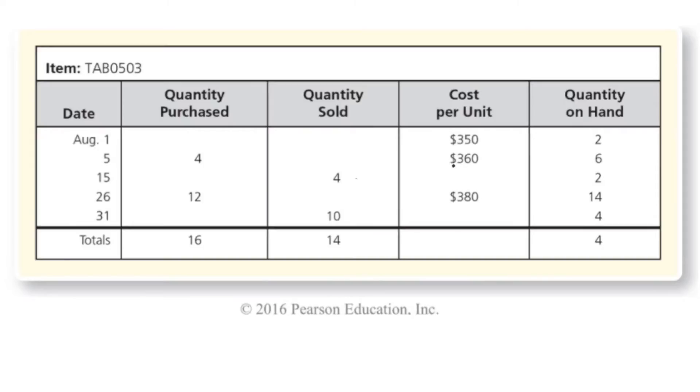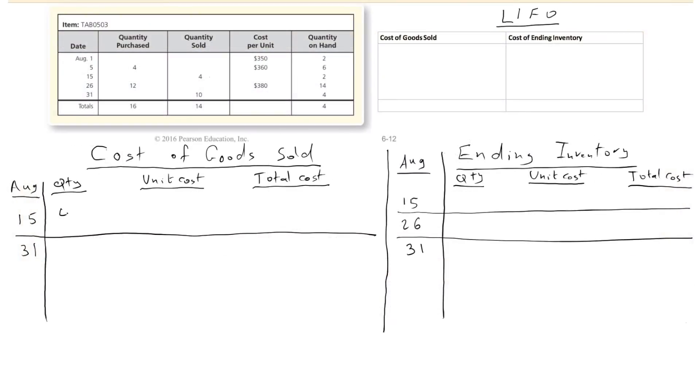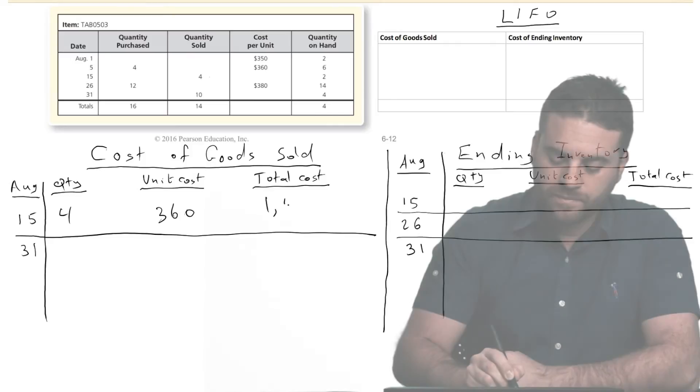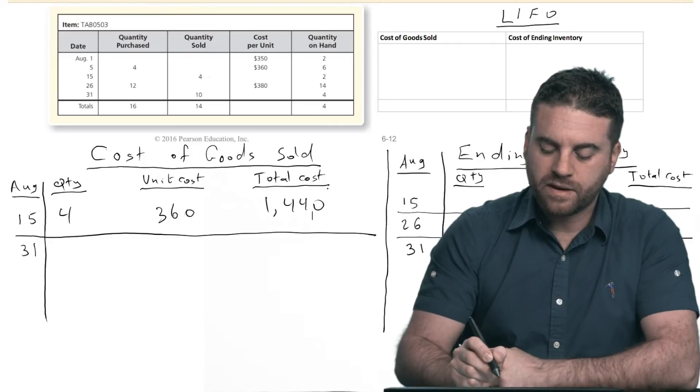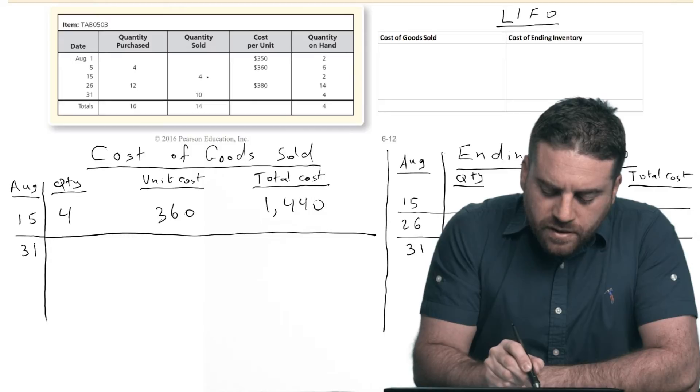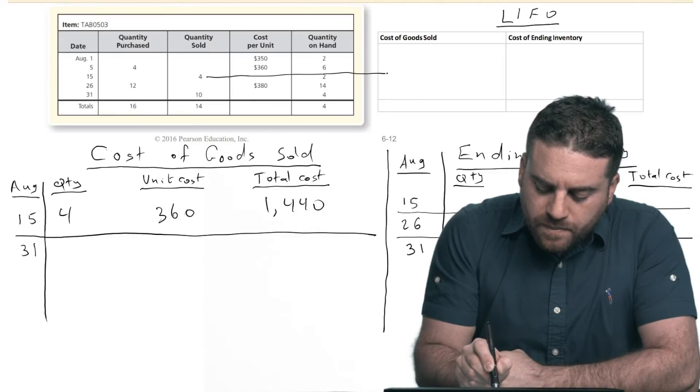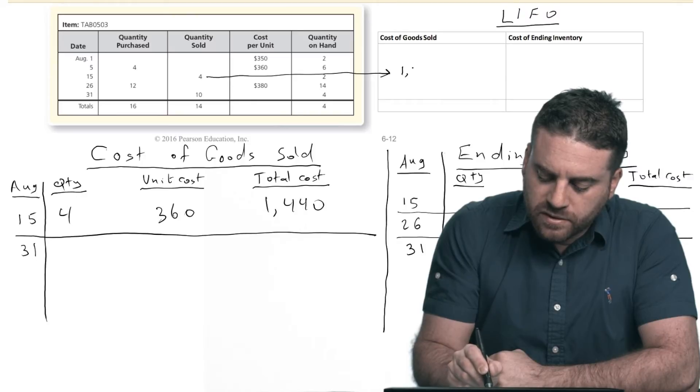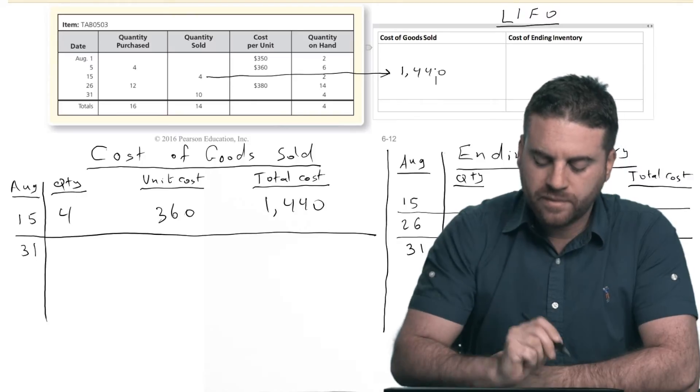So do I have enough units? Do I have four units? Yeah, well, we have the exact same amount. We have four units purchased on August 5th, and I sold out four units. So that's perfect. $360 just multiplied by four. So the quantity is four. The unit cost is $360. So $360, multiply your 360 by four, that would be $1,440. So those four units that I sold out, cost of goods sold for those is $1,440.